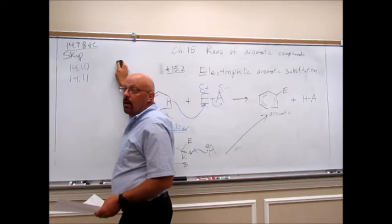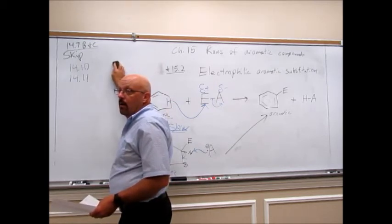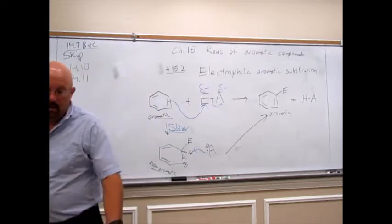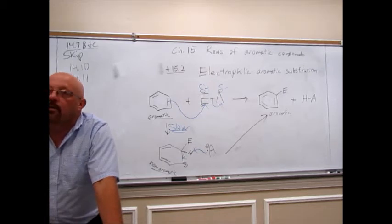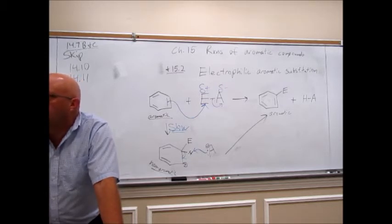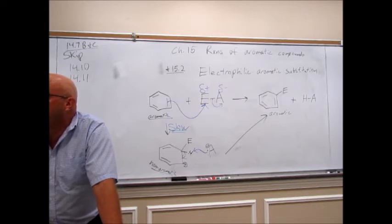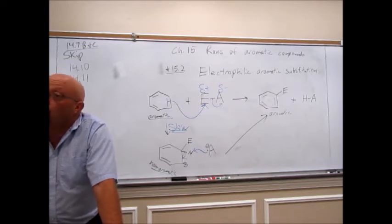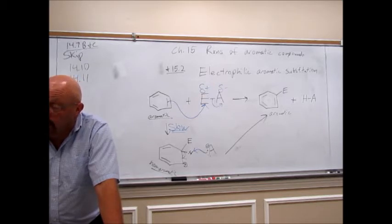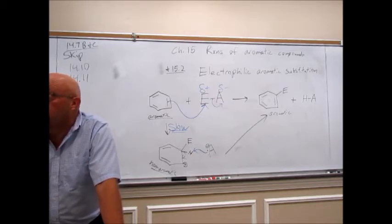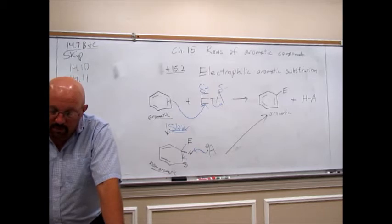Student question: why does the ring want to react at all? These electrophiles, especially if they have a full plus charge, are just so reactive that they force the benzene to react even though the benzene doesn't want to. Most of our electrophiles will have a full plus charge — they're cations, and cations are not stable. They're going to make that ring react whether it wants to or not.